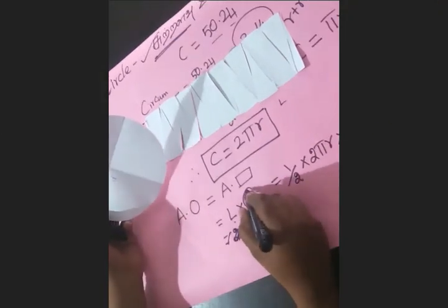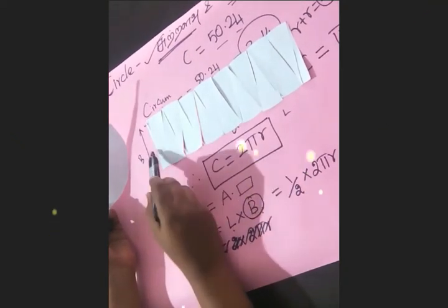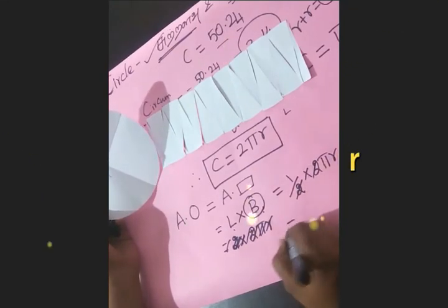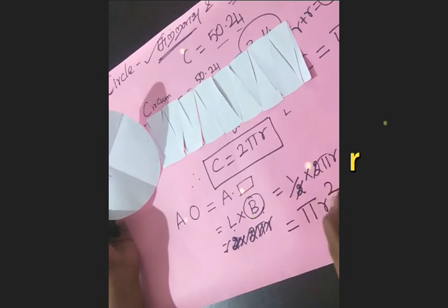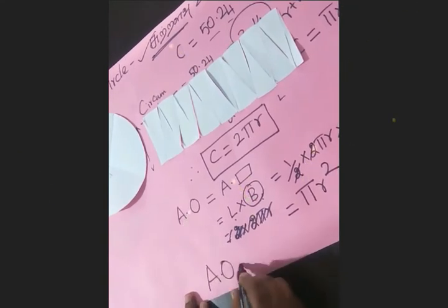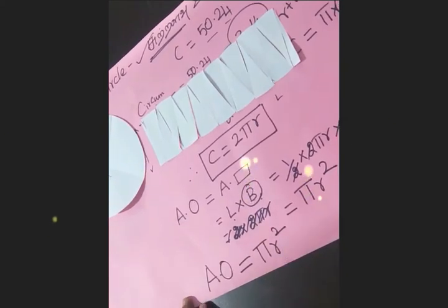The circumference of the circle is 2πr, so half the circumference equals πr. Now for the breadth: the breadth of the rectangle corresponds to the radius r. So the area equals πr × r, which gives us πr².